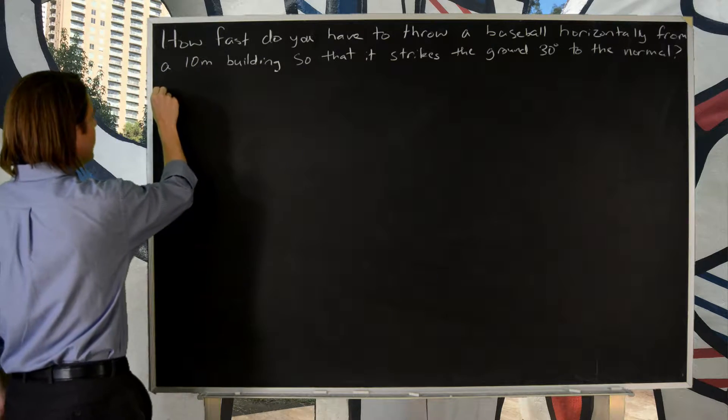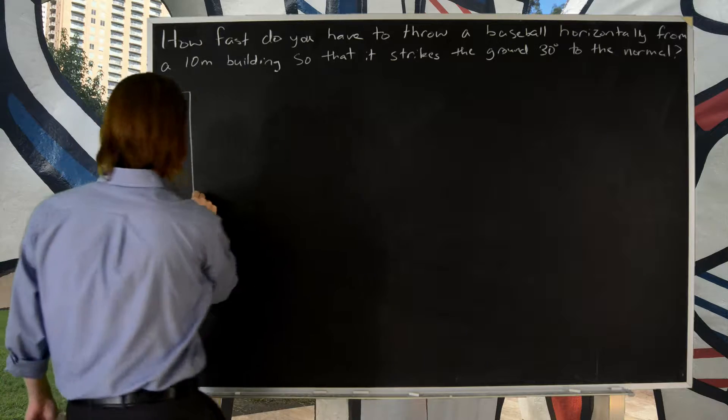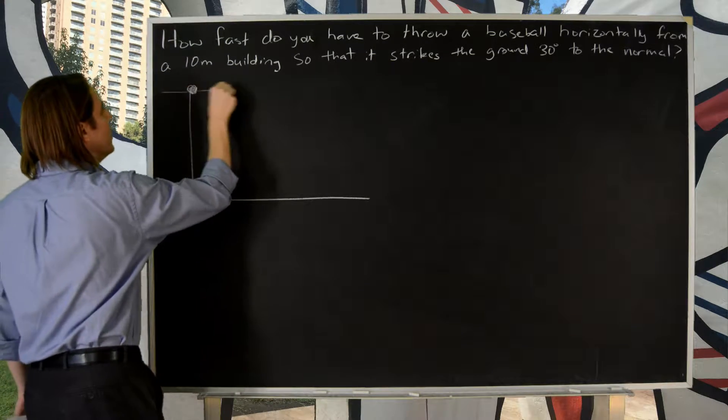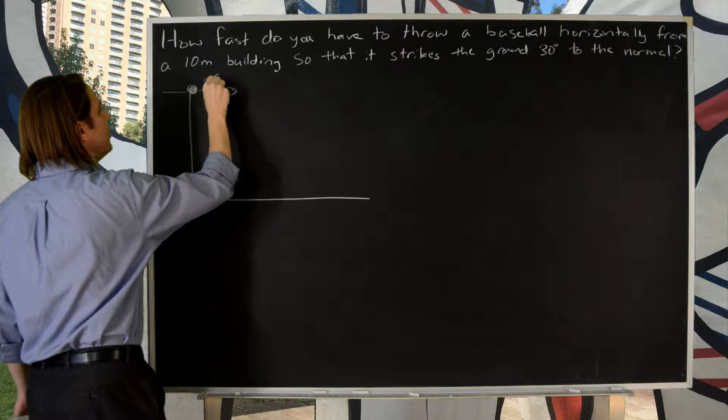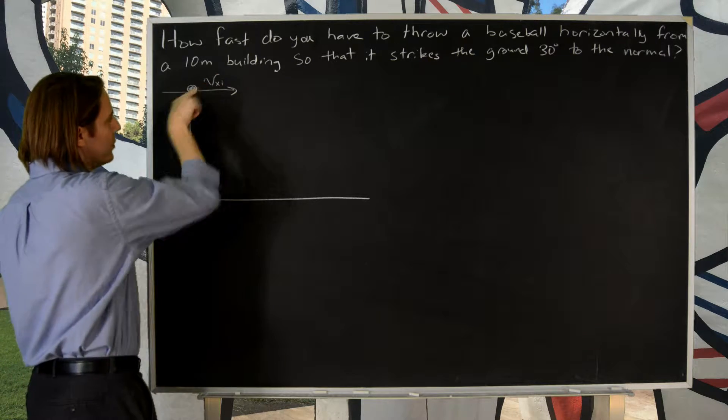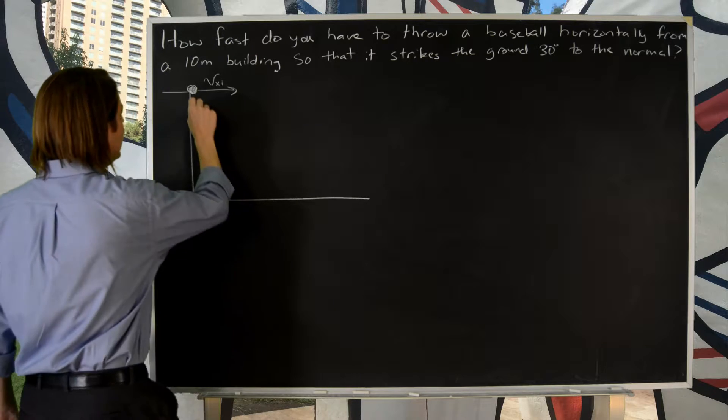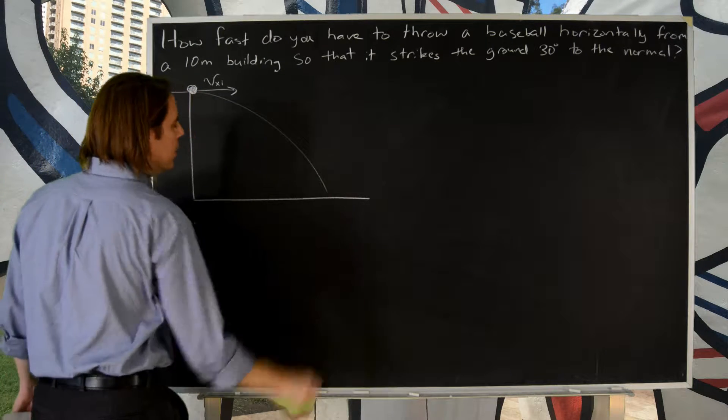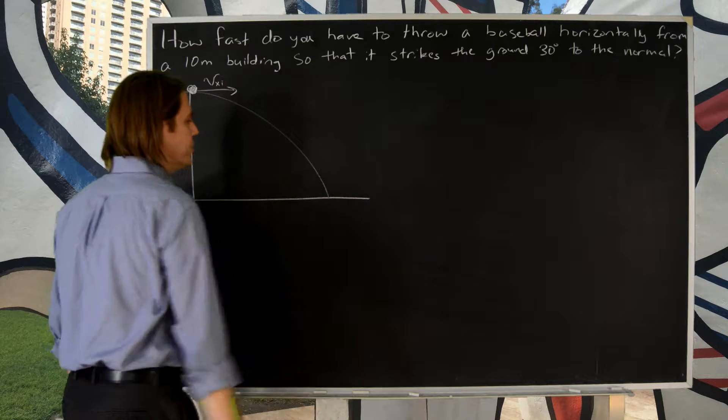So first let's throw it real quick. We've got our 10 meter building and then the ground, and we've got a ball with an initial velocity which I'll go ahead and label Vxi because it's only in the x direction. And you know what's going to happen - the ball is going to follow a parabolic trajectory like that.